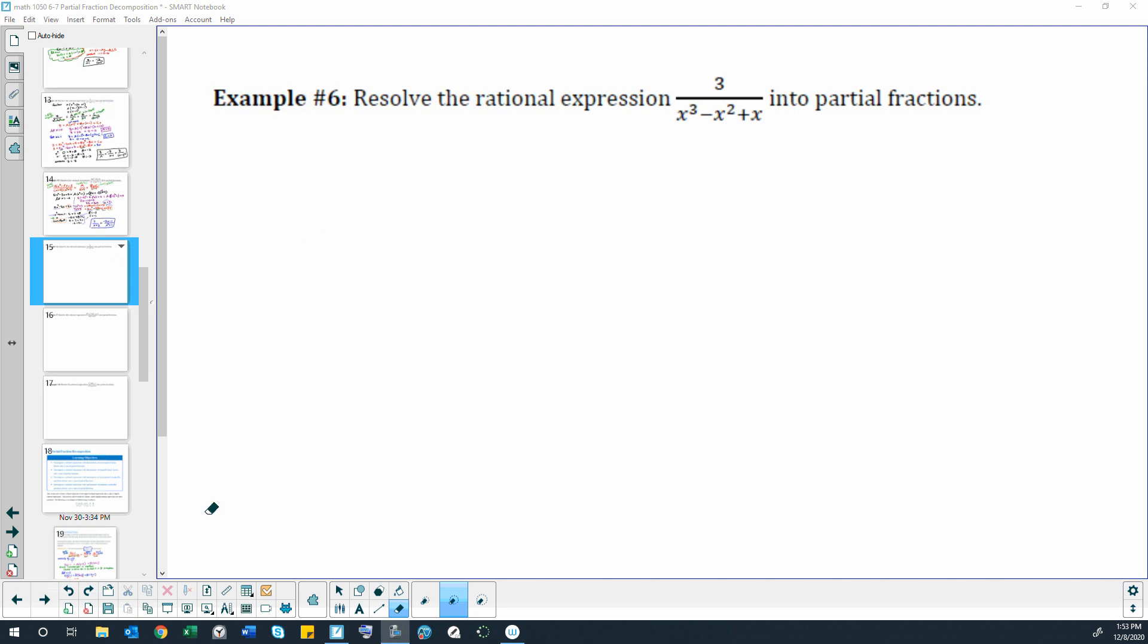Example 6, section 6.7. We'll have to start by factoring the denominator. Factor out an x, so we have x squared minus x plus 1, and then we can try factoring this part.